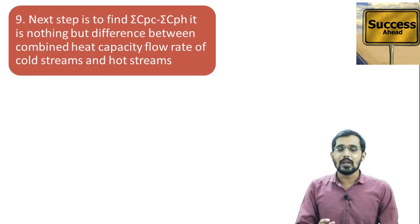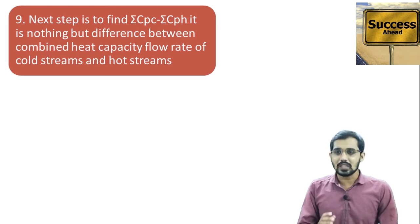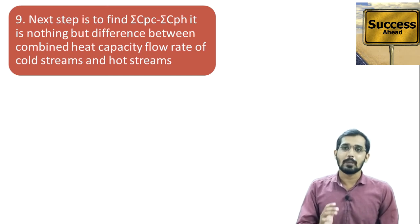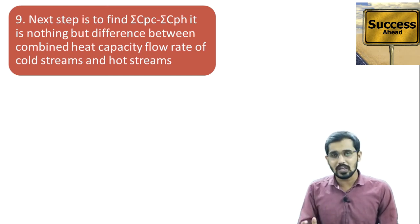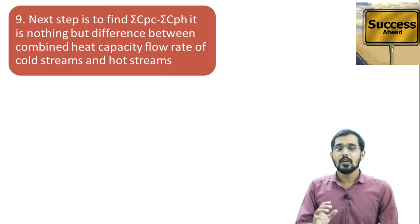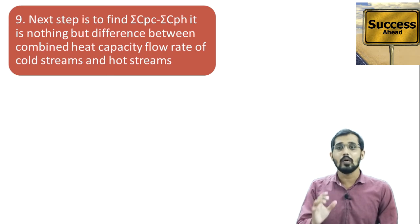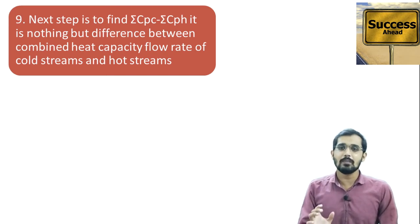The next step is to find the summation of Cpc minus the summation of Cph, which is the difference between the combined heat capacity flow rates for hot streams and cold streams. We use the temperature profiles to find this difference. In the last lecture, I already explained how to find this ΣCpc − ΣCph value.